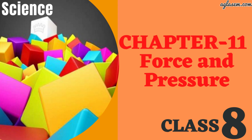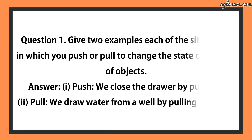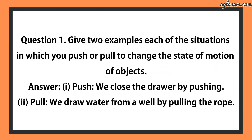Let's discuss question and answers. Question number 1: Give two examples each of situations in which you push or pull to change the state of motion of objects. The answer is: Push — we close the drawer by pushing. Pull — we draw water from a well by pulling the rope.